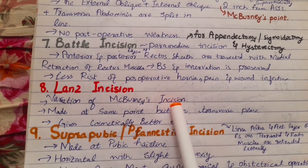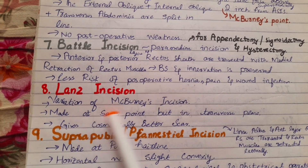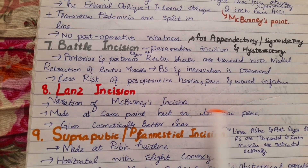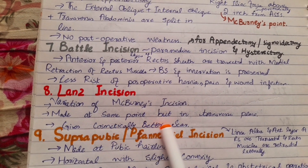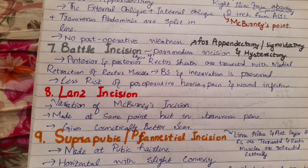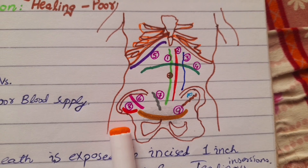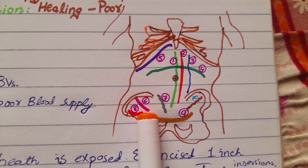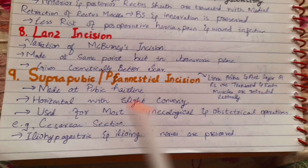Then we have the Lanz incision, which is a variation of the McBurney's incision. It is made at the same point but in the horizontal or transverse plane, and it gives a cosmetically better scar than the McBurney's incision. Number eight in the diagram shows the Lanz incision.